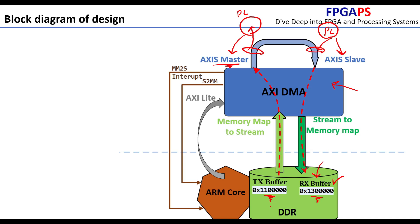Consider that we have 1 million data items in the TX buffer — it doesn't make sense to transfer all of that data one by one with the ARM core. The DMA engine handles the data movement so the ARM core can perform more important tasks like digital signal processing and data analysis. Still, the AXI DMA engine needs to be controlled and monitored.